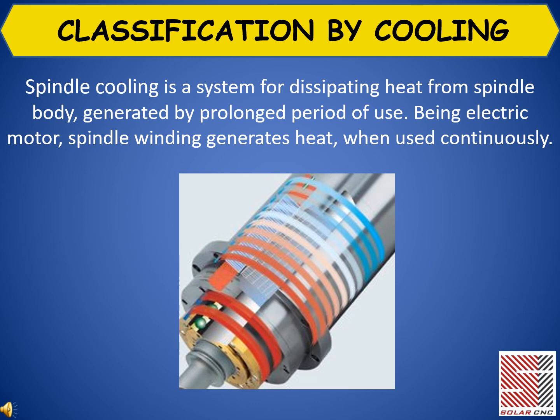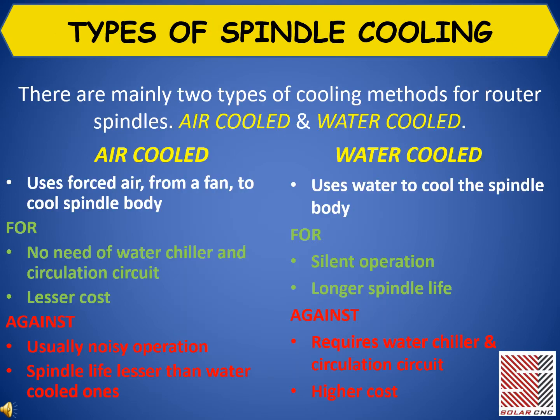Classification by cooling. Spindle cooling is a system for dissipating heat from the spindle body, generated by prolonged period of use. Being an electric motor, spindle winding generates heat when used continuously. There are mainly two types of cooling methods for router spindles: air cooled and water cooled.